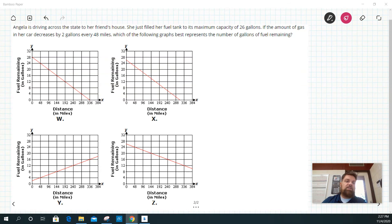Now for this next example, it says Angela is driving across the state to her friend's house. She just filled her fuel tank to its maximum capacity of 26 gallons. If the amount of gas in her car decreases two gallons every 48 miles, then which of the following graphs represents the amount of remaining gallons of fuel?